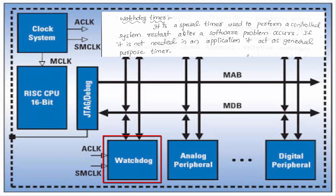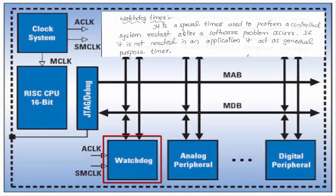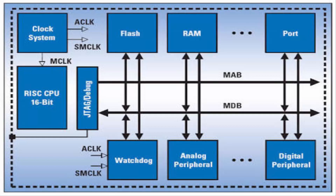R4 to R15 are general purpose registers used when needed in an application. The watchdog timer can act as a general purpose timer. If a software problem occurs, the watchdog timer is used to restart the system. If no such problem occurs, it acts as a normal general purpose timer.